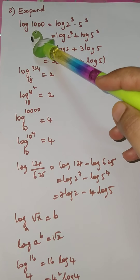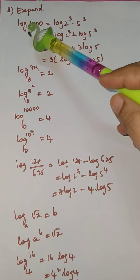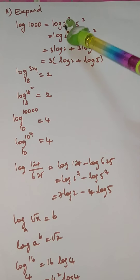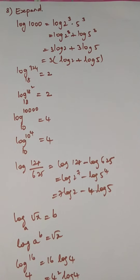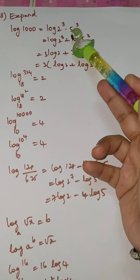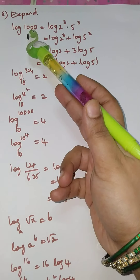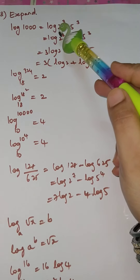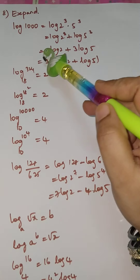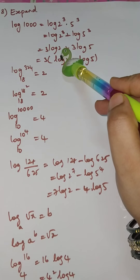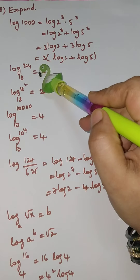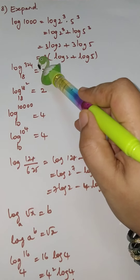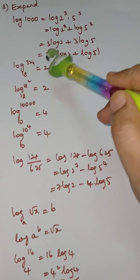Eighth problem: expand log(1000). We write 1000 = 8 × 125 = 2³ × 5³. So log(1000) = log(2³) + log(5³) = 3log2 + 3log5 = 3(log2 + log5).